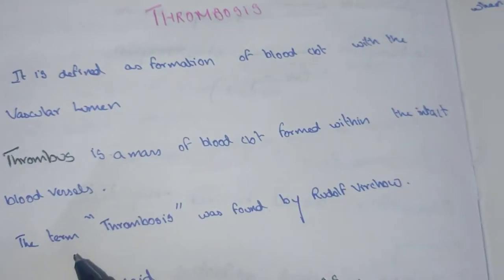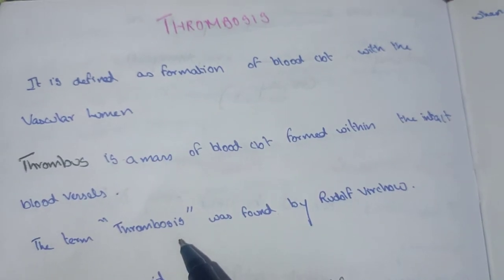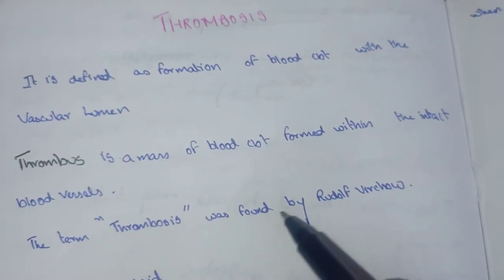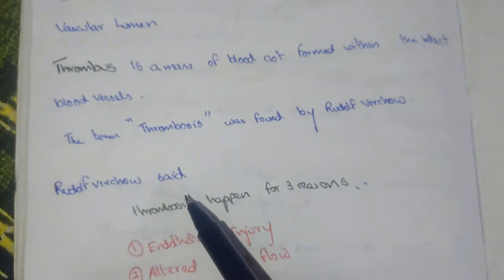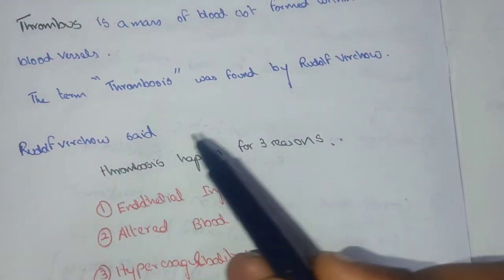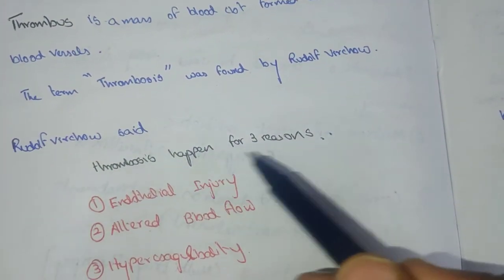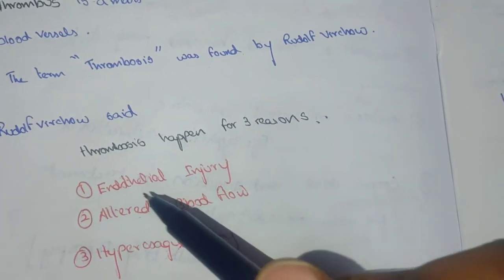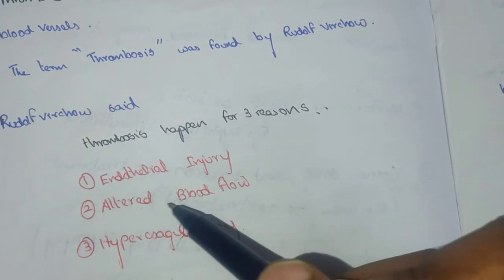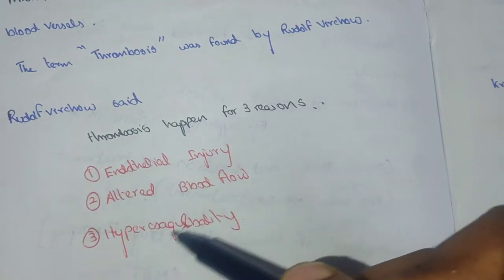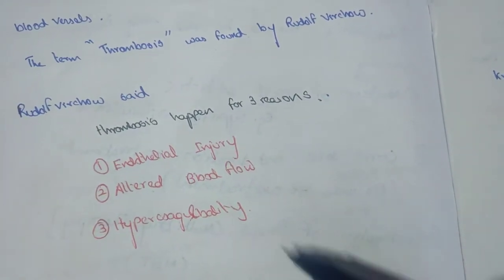The term thrombosis was described by Rudolf Virchow. Virchow said thrombosis happens due to three major reasons: the first one is endothelial injury, the second one is altered blood flow, and the third one is hypercoagulability.